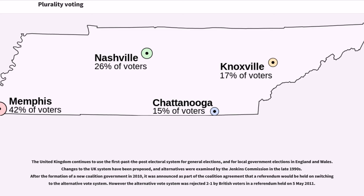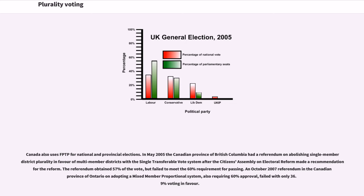The United Kingdom continues to use the first-past-the-post electoral system for general elections and for local government elections in England and Wales. Changes to the UK system were examined by the Jenkins Commission in the late 1990s, and after the formation of a coalition government in 2010, a referendum was announced on switching to the alternative vote system. However, the alternative vote system was rejected 2 to 1 by British voters in a referendum held on May 5, 2011. Canada also uses FPTP for national and provincial elections; a 2005 British Columbia referendum on switching to a single transferable vote system obtained 57% but failed to meet the 60% requirement, and a 2007 Ontario referendum on adopting a mixed-member proportional system failed with only 36.9% in favor.